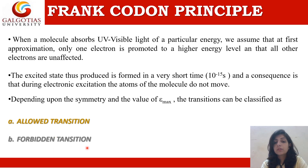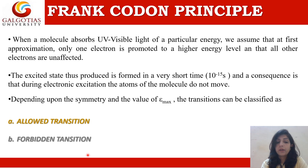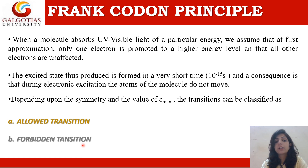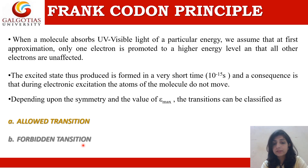Forbidden transitions are those having an epsilon max value less than 10 to the power 4, such as 10 to the power 3. These are very low-intensity transitions and are referred to as forbidden transitions. A very common example of forbidden transitions is the n to pi star transition, which generally has very low epsilon max values of 10, 10 squared, or 10 cubed.